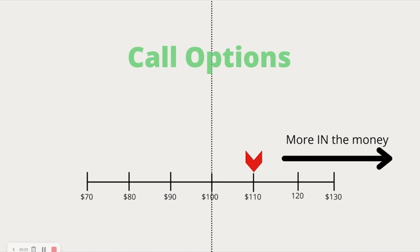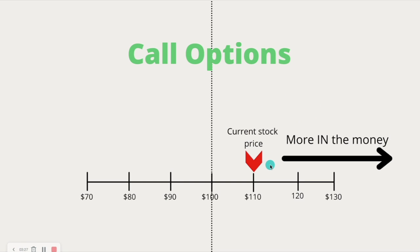So if you buy an out of the money call — a call that's above where we're currently trading — if we were trading at $100 and we bought the $120 call, then we would be out of the money. And something to know about out of the money calls is they do not have any intrinsic value.